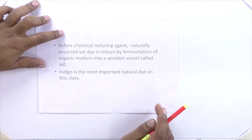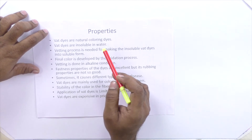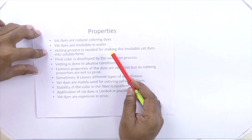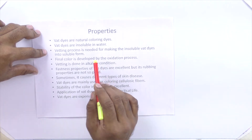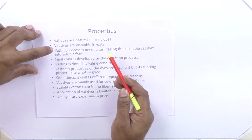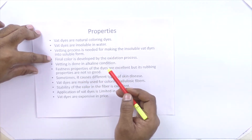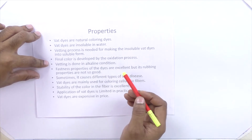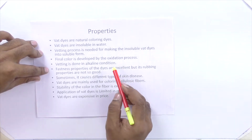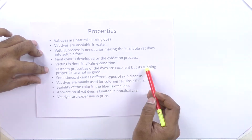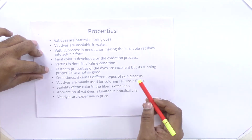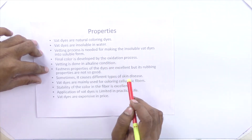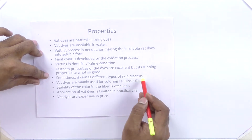Most denims are dyed with indigo dyes. Properties of VAT dyes: VAT dyes are natural coloring matters, though synthetic versions are also available. They are insoluble in water. The process to reduce the VAT dye is called VATing, converting the insoluble form to soluble. The final color is developed only by oxidation; before that, the color differs from the original. VATing is done in alkaline medium with a reducing agent. The fastness properties of VAT dyes are excellent — better than reactive dyes. Reactive dyes are very poor in chlorine fastness, whereas VAT dyes are very good in chlorine fastness.